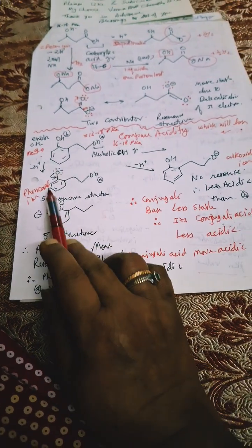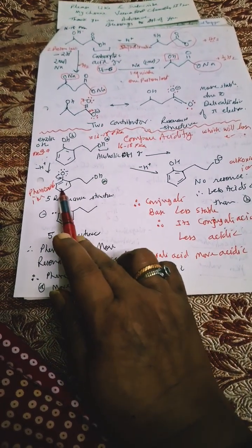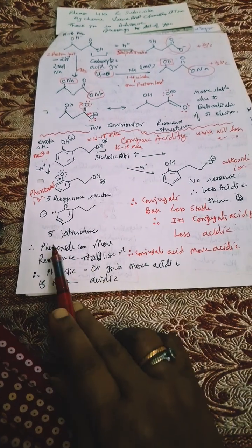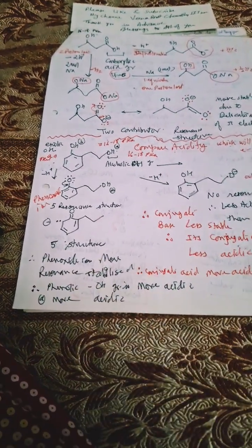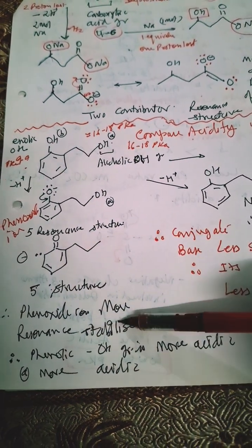It loses proton very readily and will form phenoxide ion and rest structure remain as such. It will get five resonating structures and this is resonance stabilized this way. These five resonating structures make this phenoxide ion more resonance stabilized.